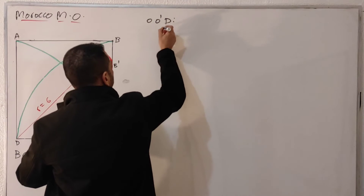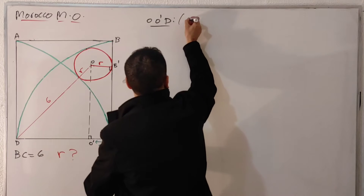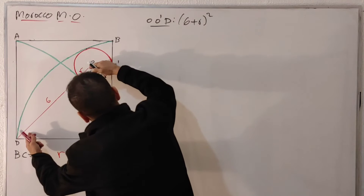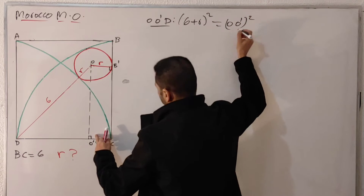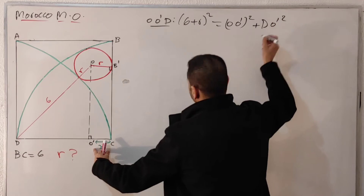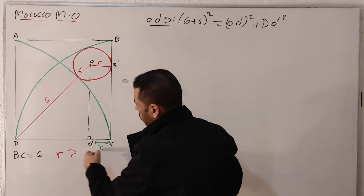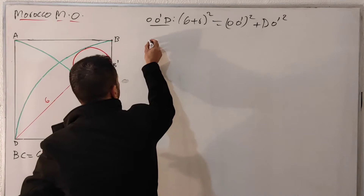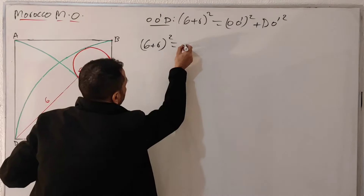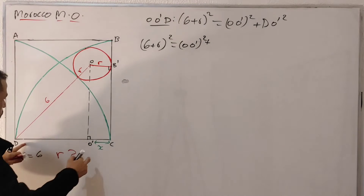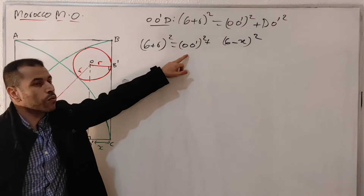On right triangle O-O prime-D, we have the hypotenuse as the sum of radii: (6 + r)² equals O prime² plus D-O prime². Now D-O prime equals CD minus x, so we replace it: (6 + r)² = O prime² + (6 − x)². This is our first equation.